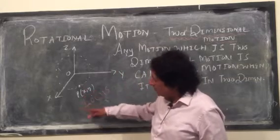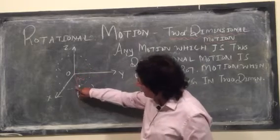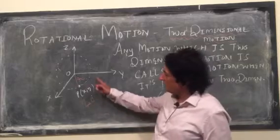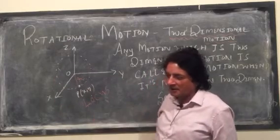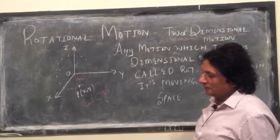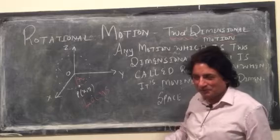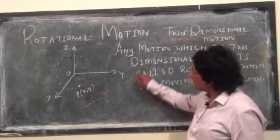The point P is moving such that its distance is always fixed from O. O-P is R. So when you are rotating it, distance R is same. It is a circular motion. It is a two-dimensional motion and it is called rotational motion.